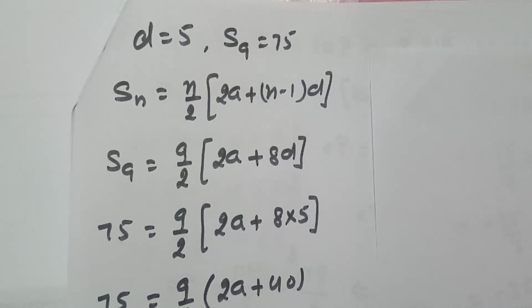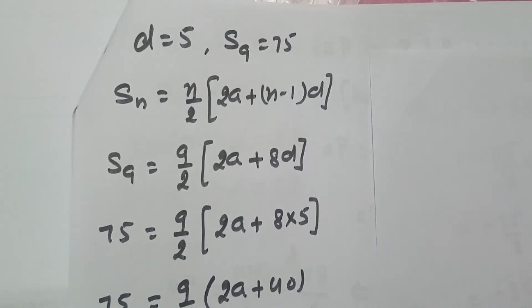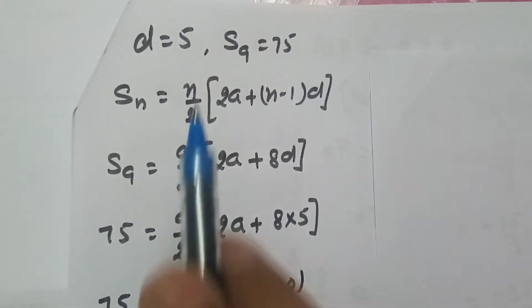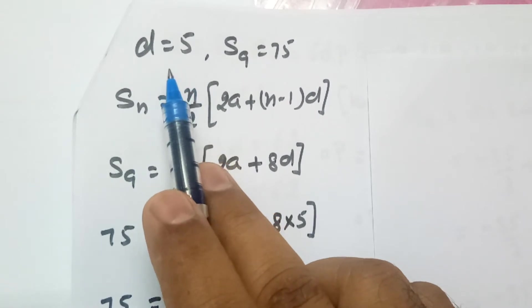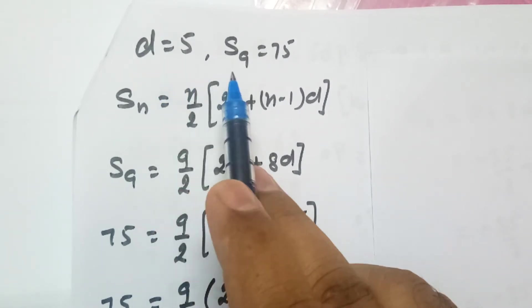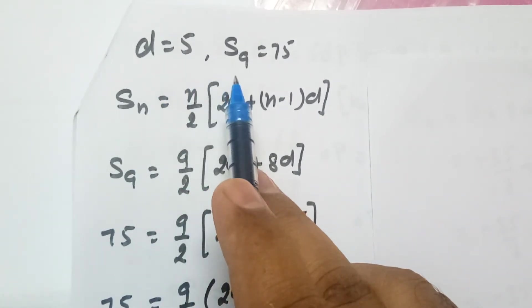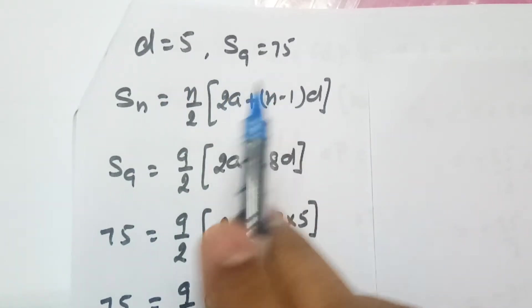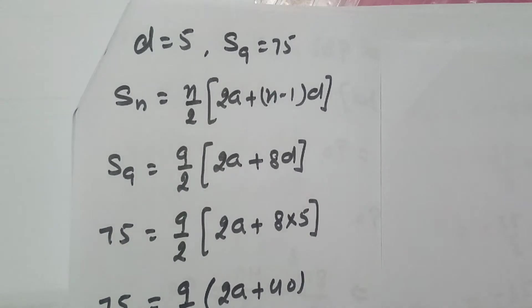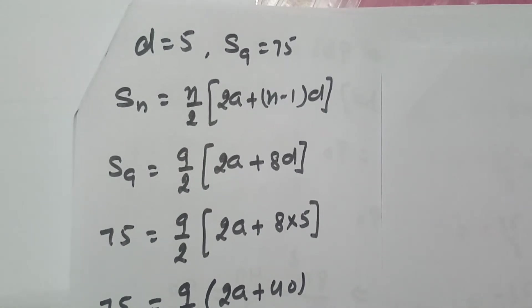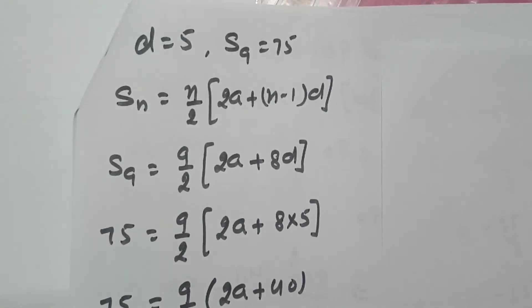In this question, it is given that the common difference of an AP is minus 5 and the sum of 9 terms is 75. We need to find the 10th term of this AP.